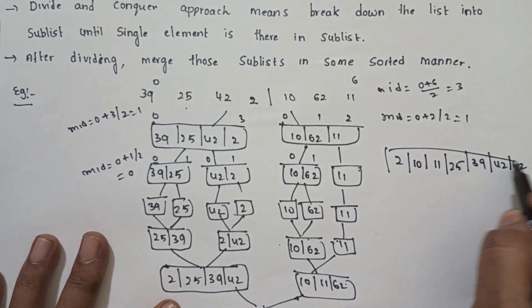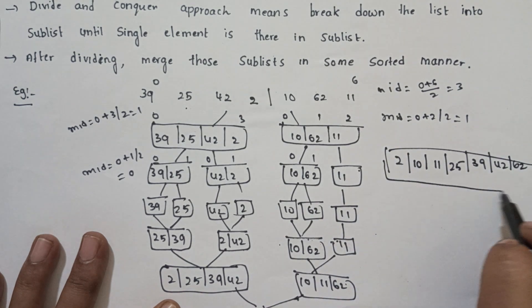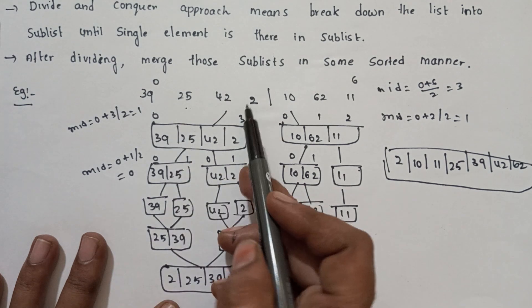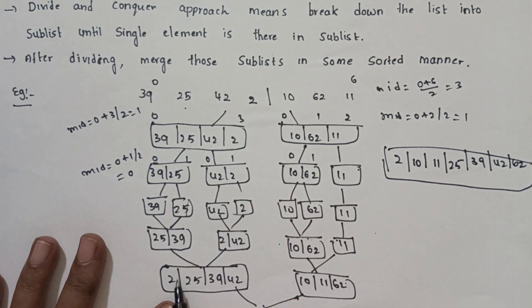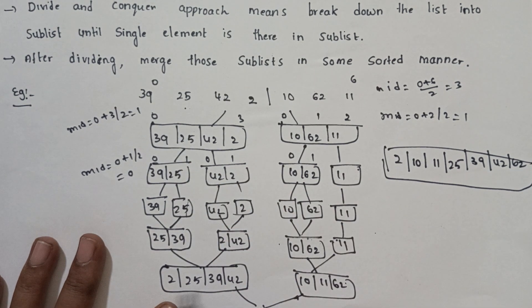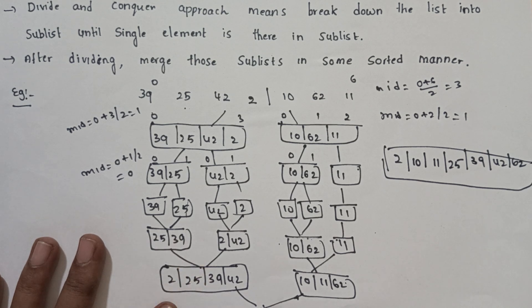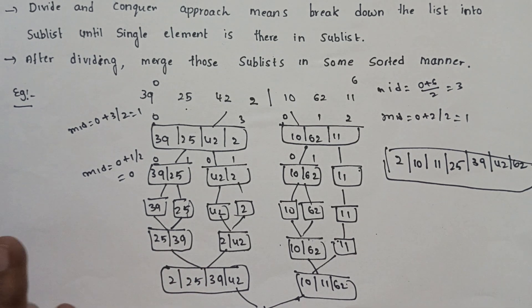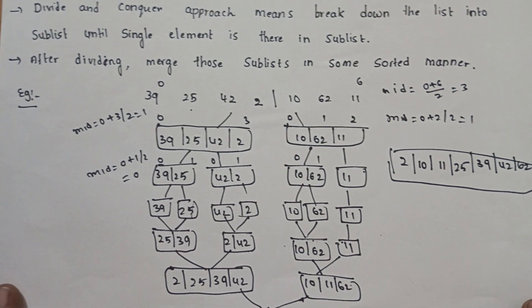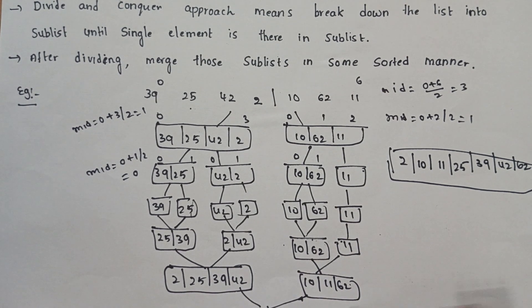We divide this list, then combine this list. Conquer this list, sorting this list. That is nothing but the Merge Sort. This is the divide and conquer approach of the Merge Sort and how we apply Merge Sort for an unsorted list.